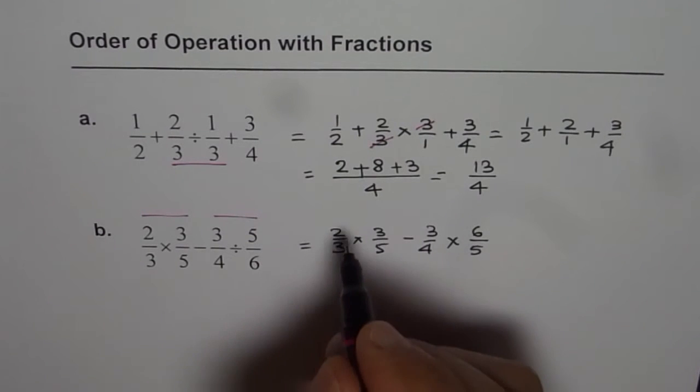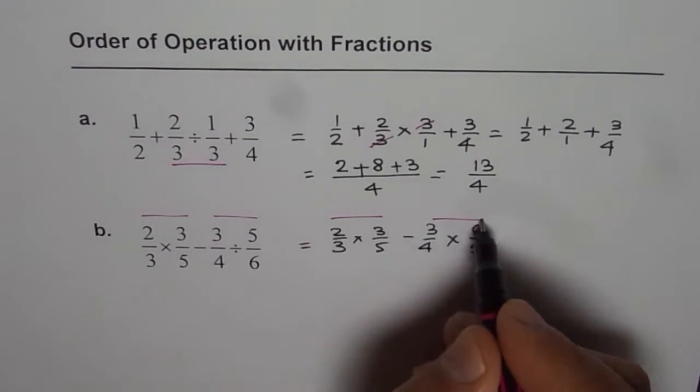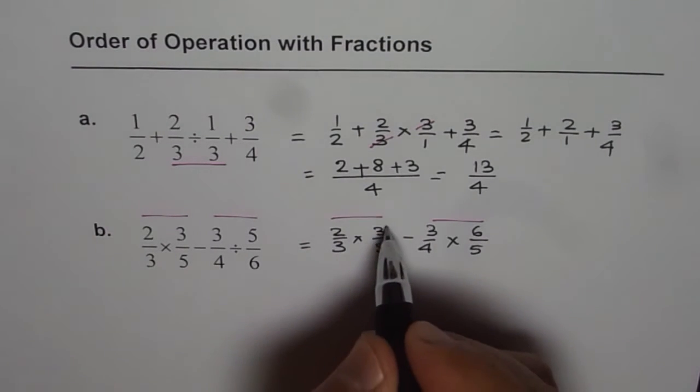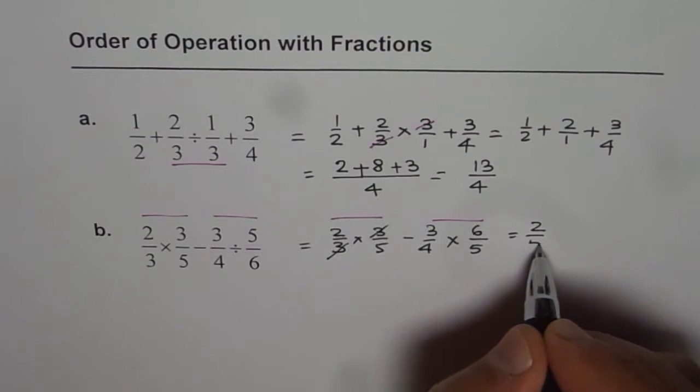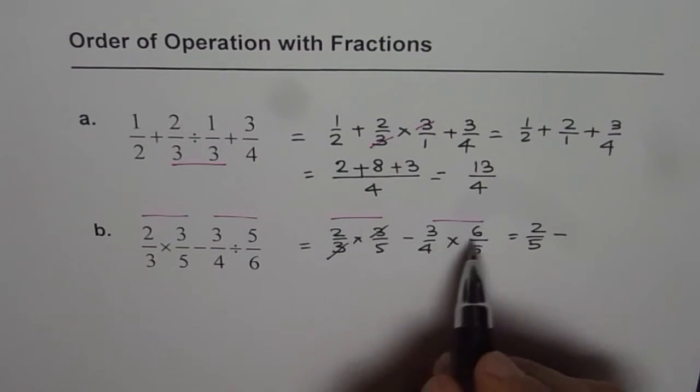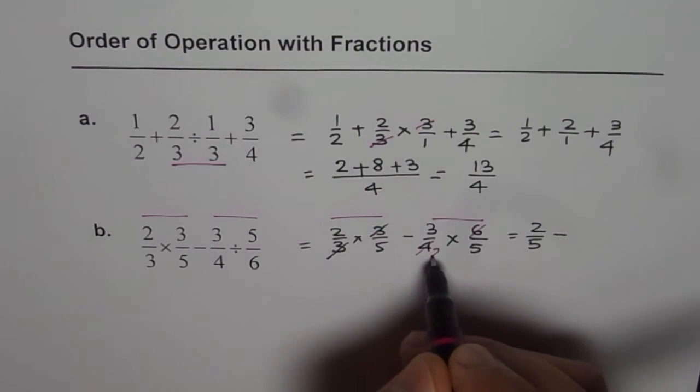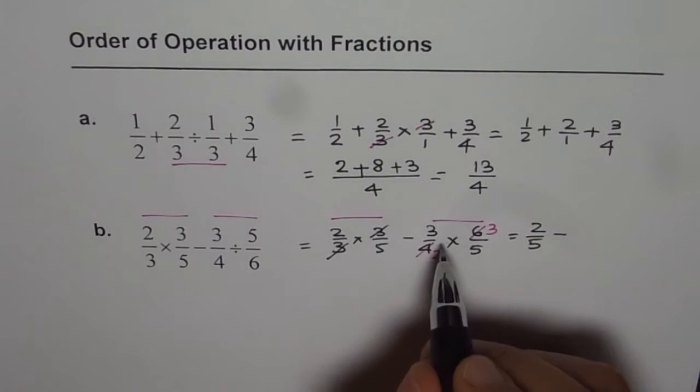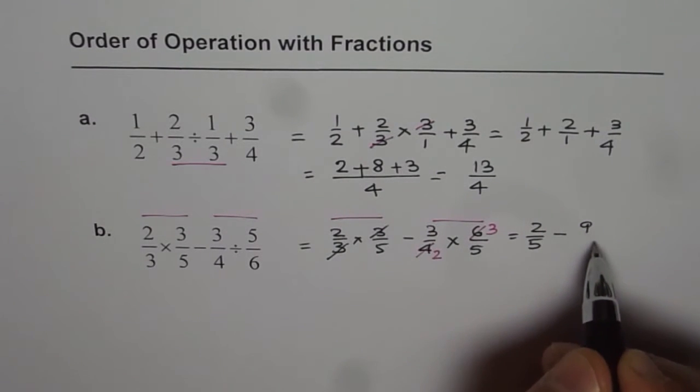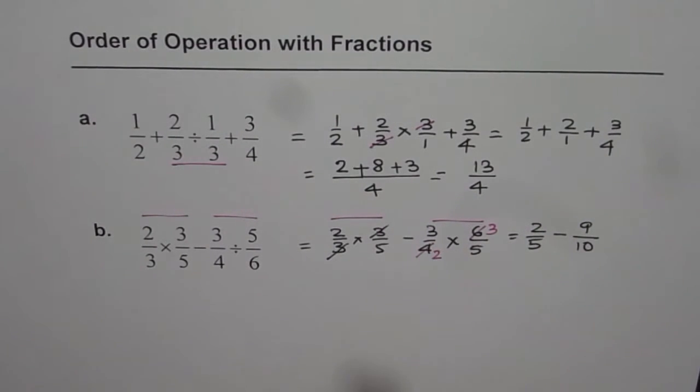Now, let us perform the two multiplication operations. So here, three and three cancel, we get two over five. So we have two over five take away. Here we can simplify a bit. We can divide these by two, two times two and two times three. So that leads to nine divided by ten.